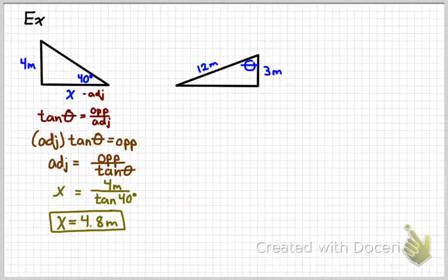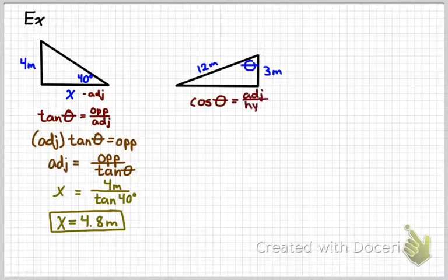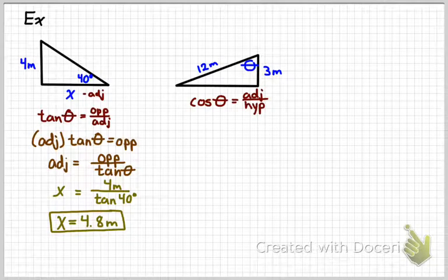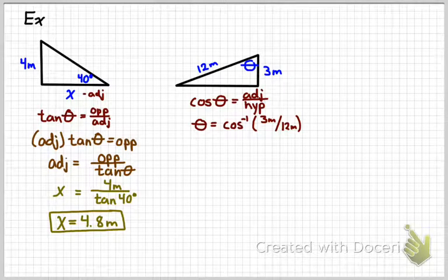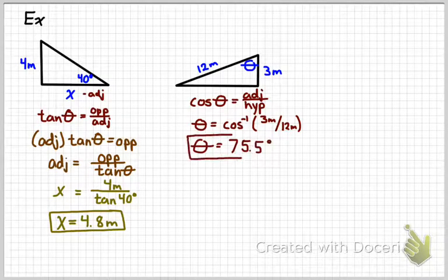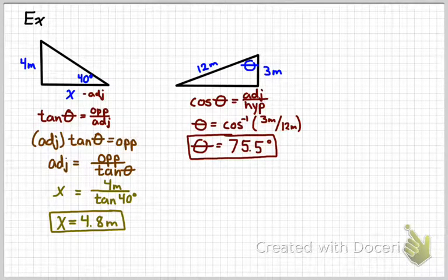Let's look at another example. Here I've got a right triangle. Hypotenuse is 12 meters. One side is 3 meters, and I'm trying to figure out the angle in between them. And so I'm going to be using the cosine. That's adjacent over hypotenuse. So when I solve that for the angle, I write it like that. Cosine to the minus 1 of 3 over 12. And then when you do the inverse cosine of 3 over 12, you should get 75.5 degrees.